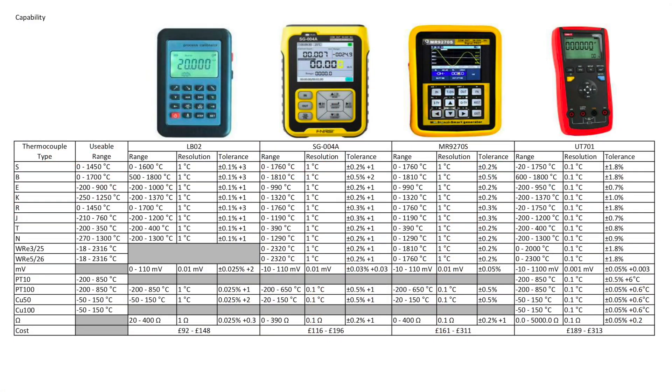So just before we do some measurements I'll put this slide up here. This is comparing the capabilities of the UT701 to my little family of cheapo process calibrators there. The LB02, SG-004A and MR9270S. You can see that it does give you all the thermocouple types and RTD types, the same as the little process calibrator units. Ranges are pretty much there. The UT701 does give you better resolution, down to 0.1 degrees C against 1 degree C for all the other units.